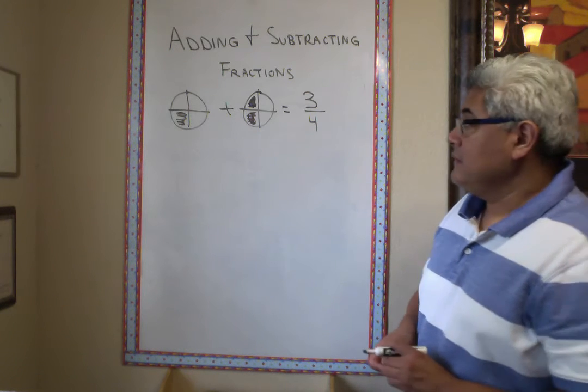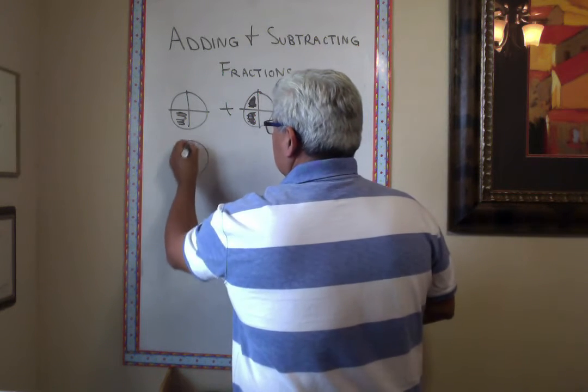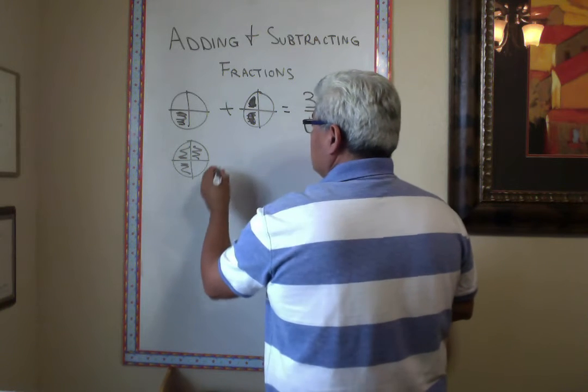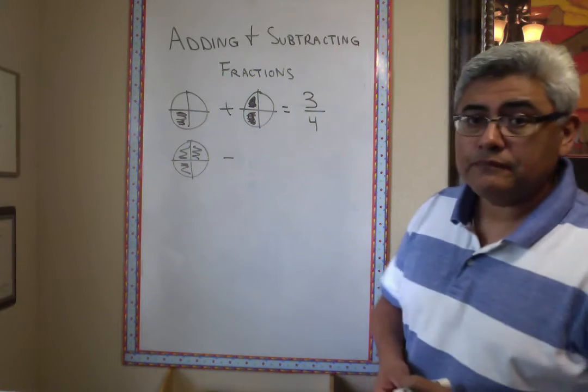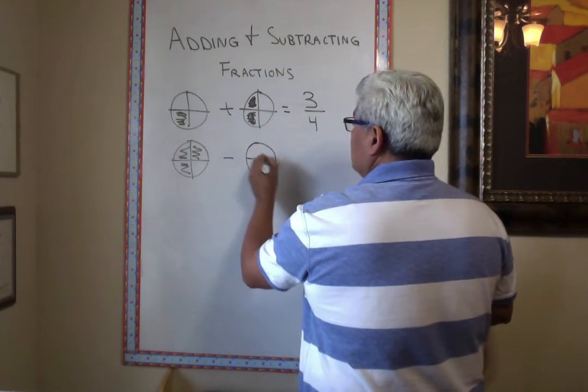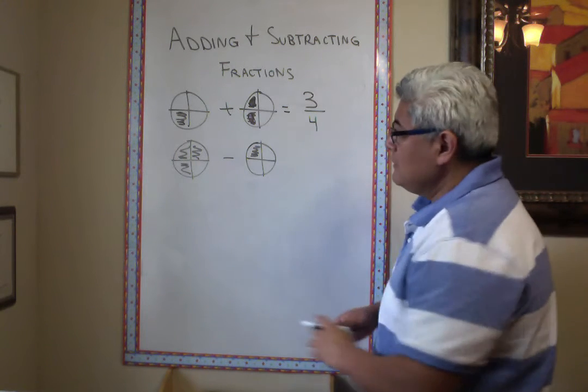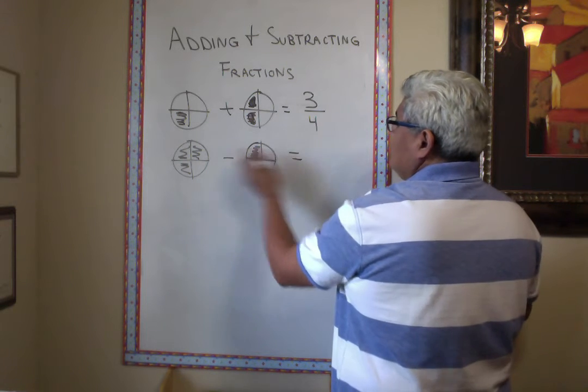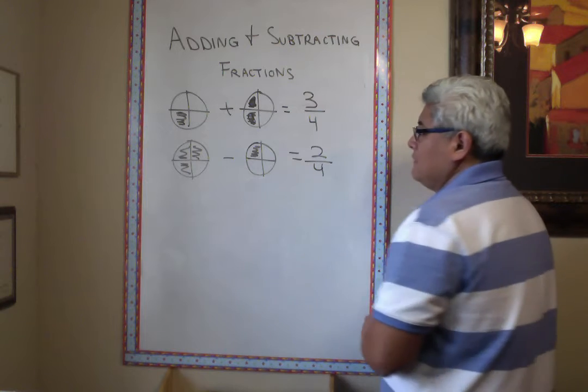Same thing with subtraction. So, you have three-fourths of a whole, and you want to take away one-fourth. So, that means you're going to take one-fourth out of those three. So, that means you're going to be left with two-fourths.